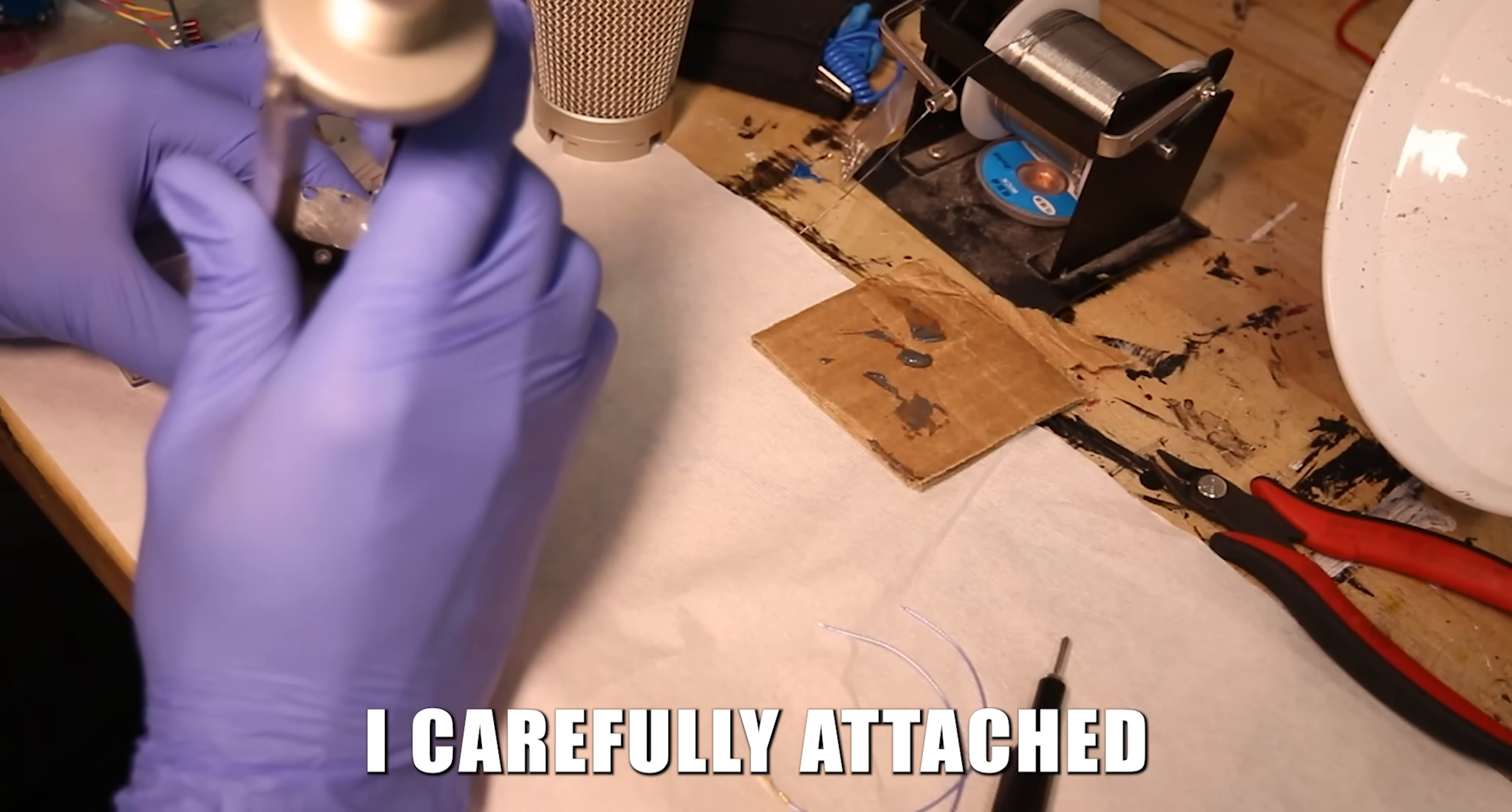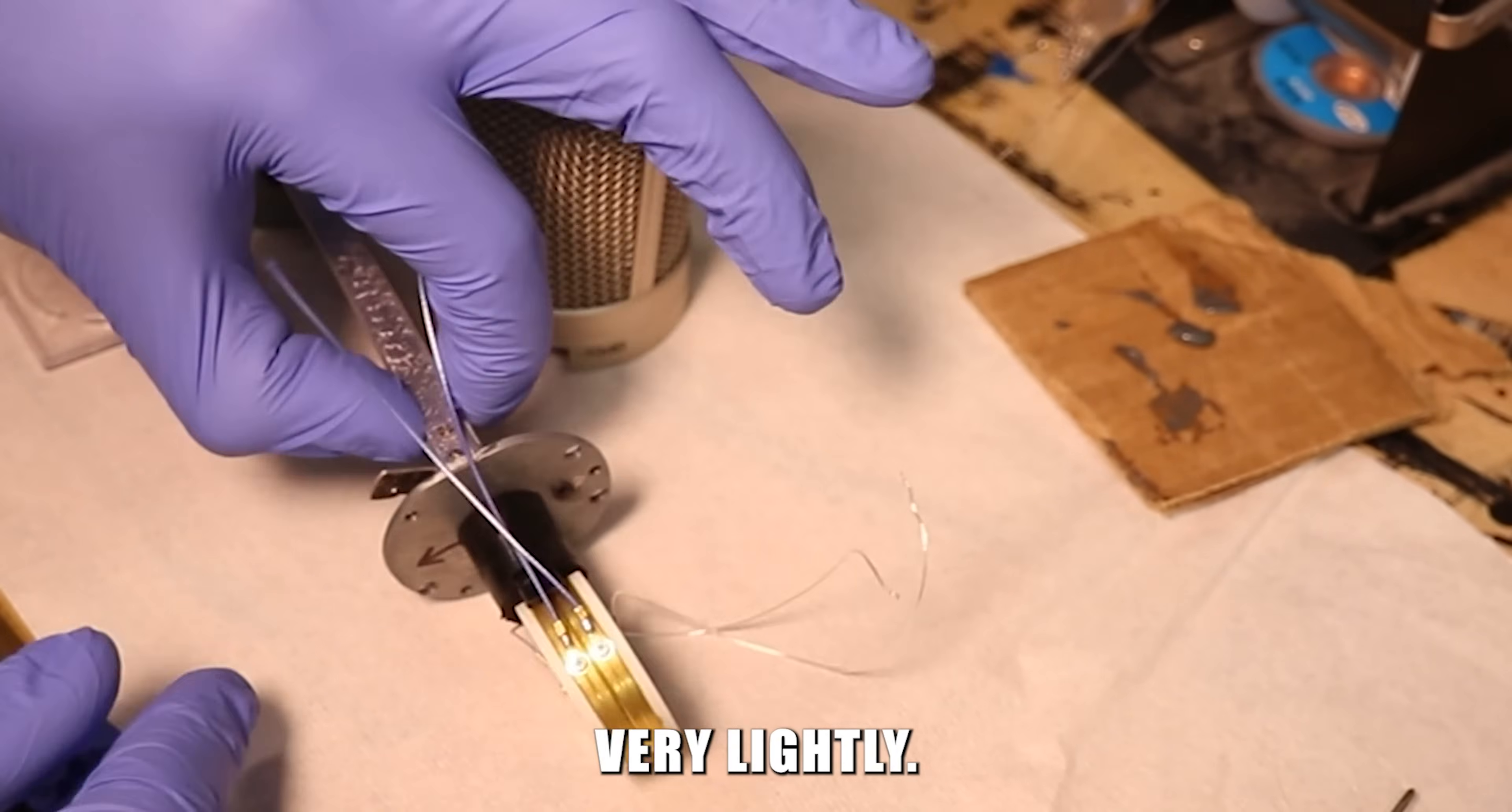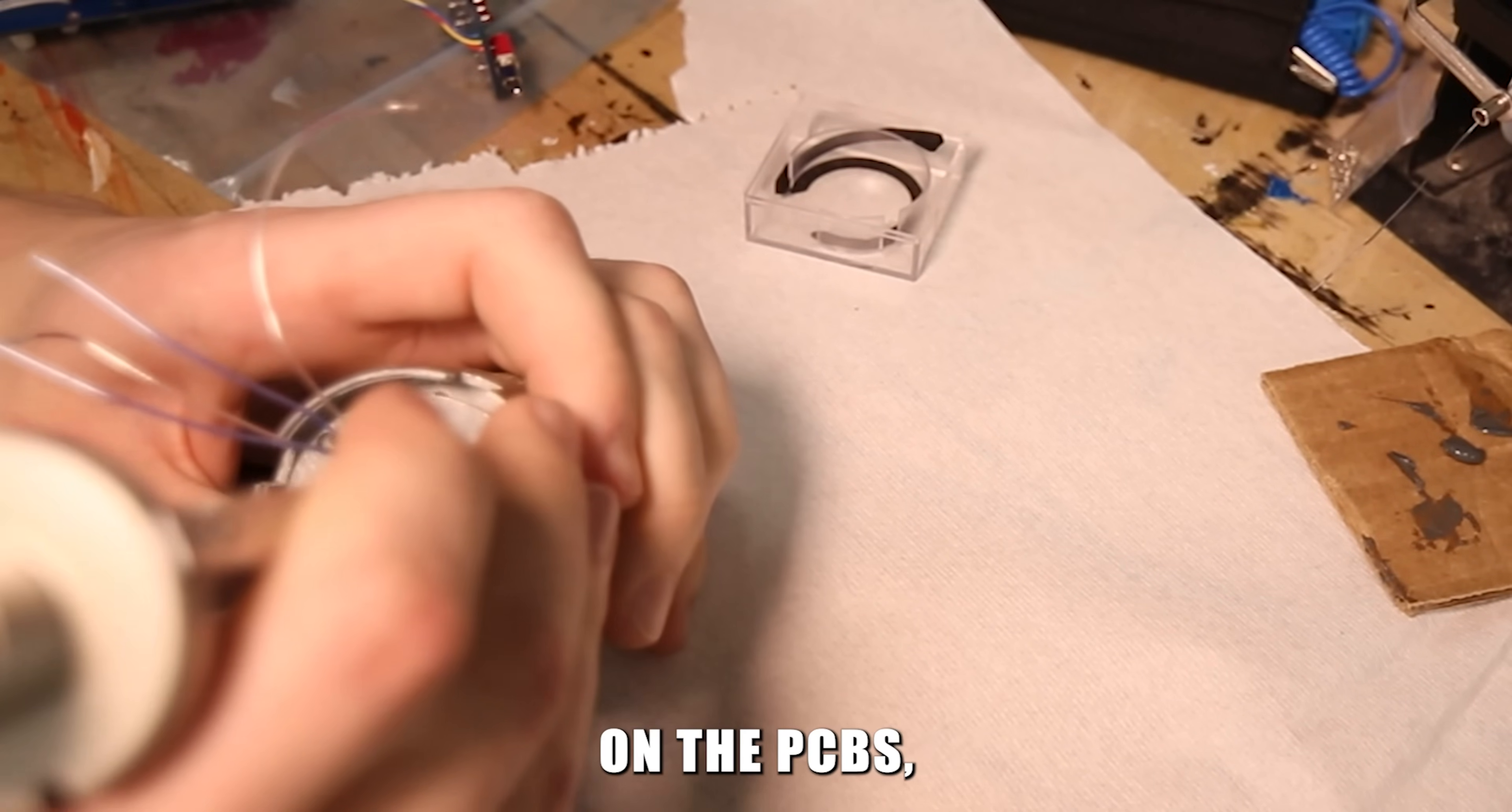Next I carefully attached the RK87 capsule to its mount. I noticed the front contact screw was really loose so I tightened it very lightly. Then I installed the headbasket.